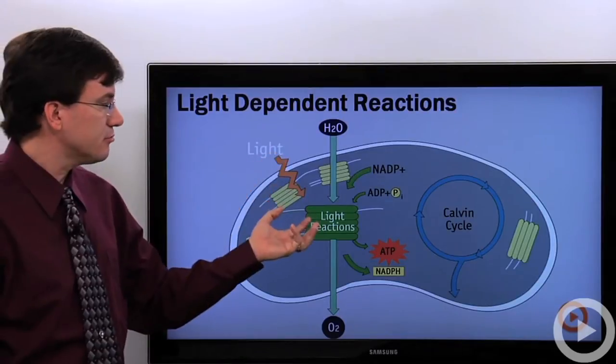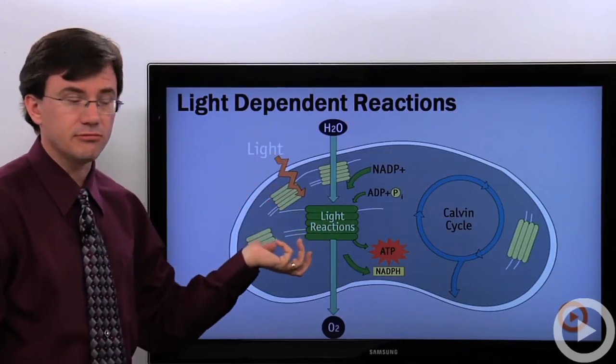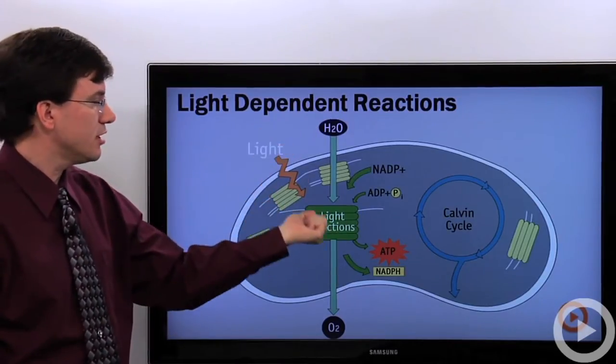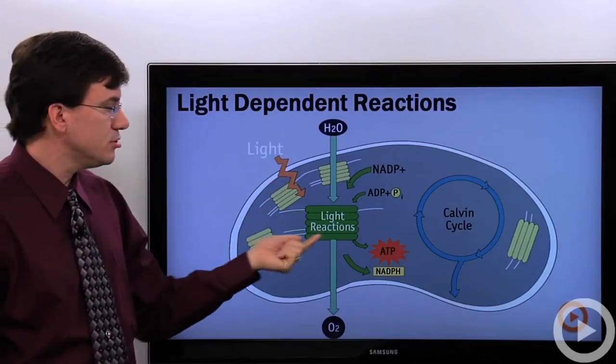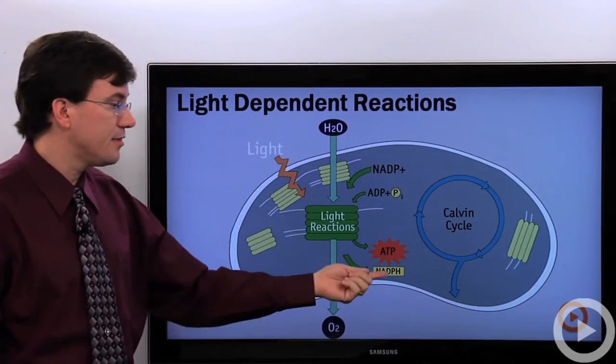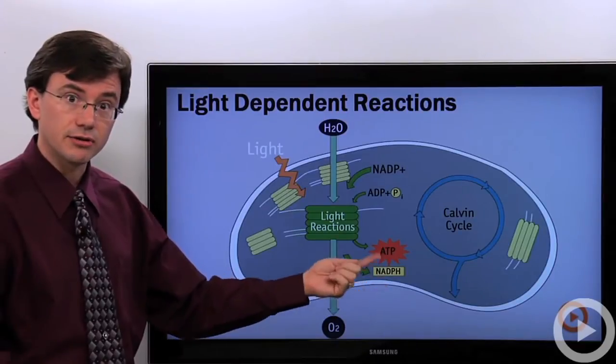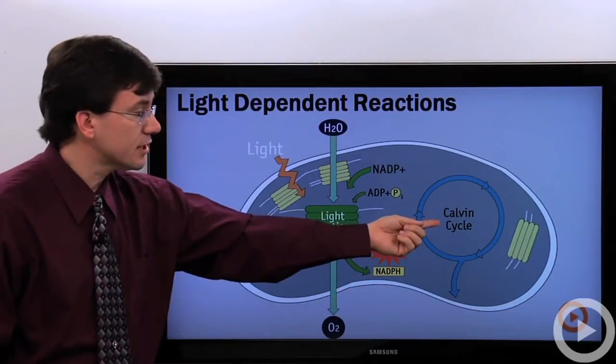Here we see the light-dependent reactions or sometimes it's just shortened to light reactions. What's going on is the harvesting of light is being used to generate the ATP, energy molecule, and the high-energy electron carrier called NADPH that the Calvin cycle requires.